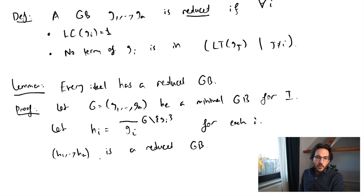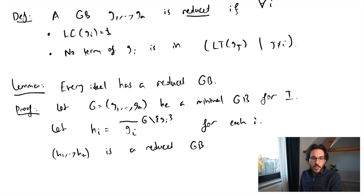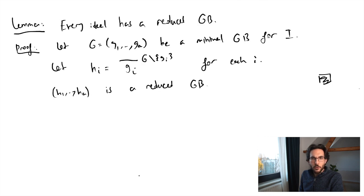I claim that h_1 through h_a is a reduced Grübner basis. The leading term of g_i was not contained in the ideal of leading terms of the other g_j's, so the leading term of g_i equals the leading term of h_i. Therefore the leading terms of h_i generate the ideal of leading terms of I, making it a Grübner basis. Reducedness follows from the properties of the division algorithm: no monomial that remains will be divisible by the leading terms of g minus g_i.